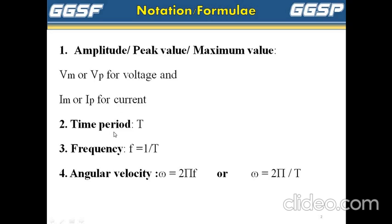Time period is denoted by capital T. Frequency is denoted by small f, where f is equal to 1 upon T. Angular velocity omega is equal to 2πf or omega is equal to 2π by T.